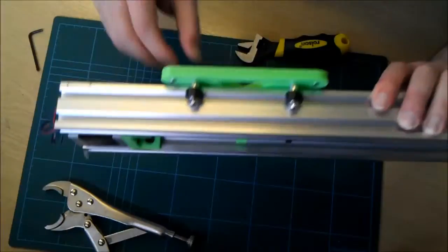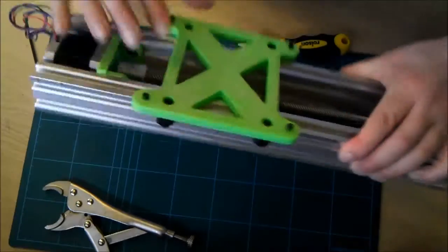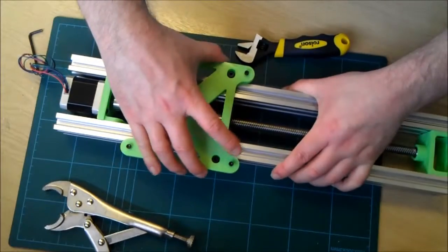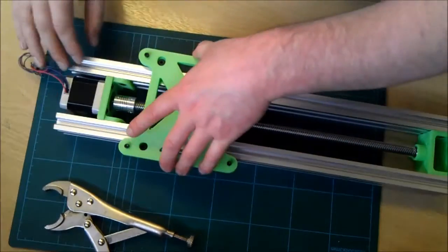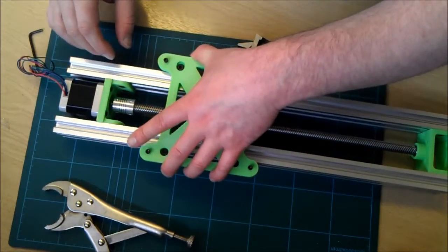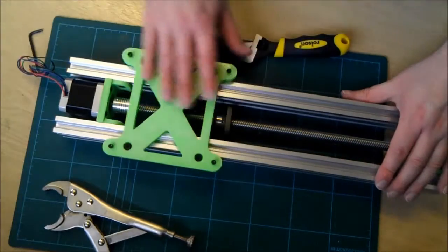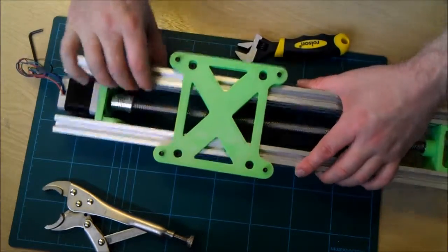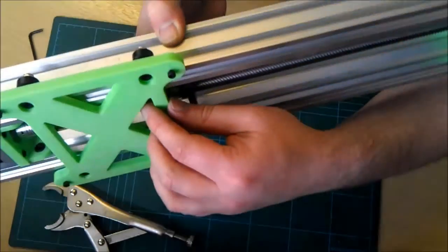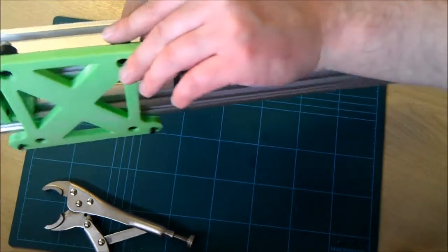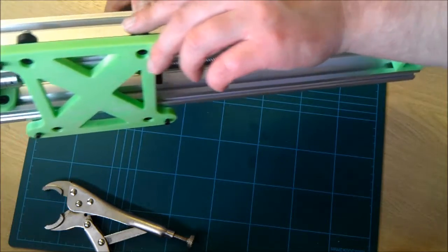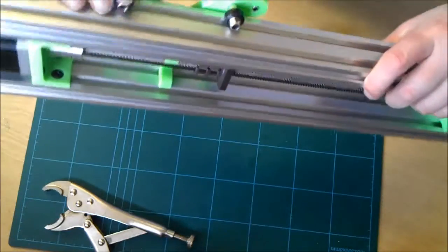Okay, I'm fairly happy with that. We've got no movement in the Y carriage except for obviously back and forth, and the wheels seem to be all running in the V slot.